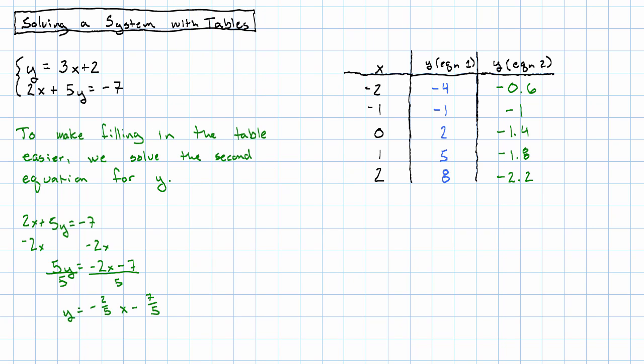Now, looking at this table, I see that I have this row where my y values are the same as each other. I think my solution is going to be x equals negative 1, and then y is this shared y value. So y equals negative 1.